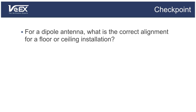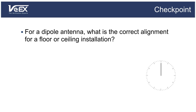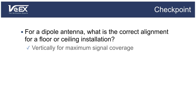Time for a quiz. For a dipole antenna, what is the correct alignment for a floor or ceiling installation — vertical or horizontal? The dipole should be aligned vertically. If you look at the radiation pattern of the dipole, the coverage in the horizontal plane is 360 degrees, which means all equipment around it will be covered if you orient it vertically.